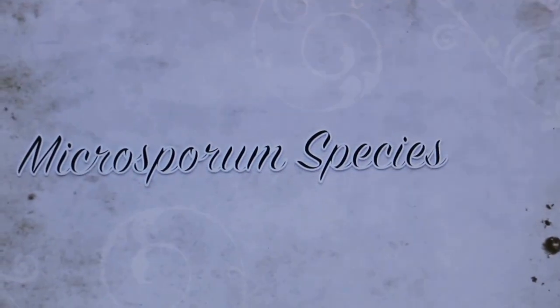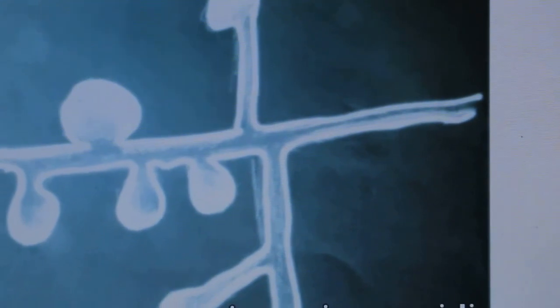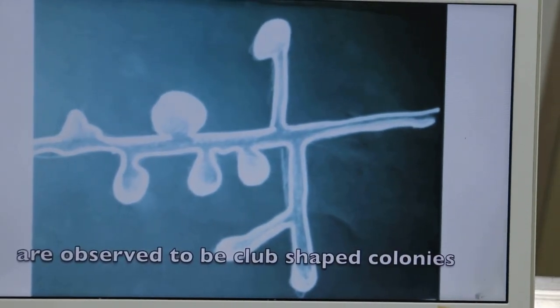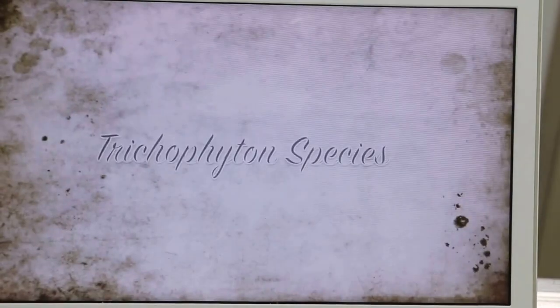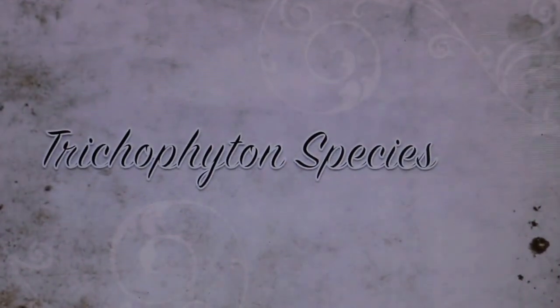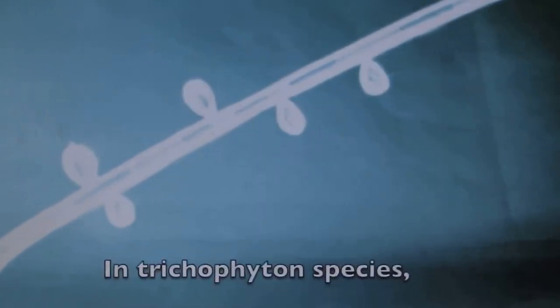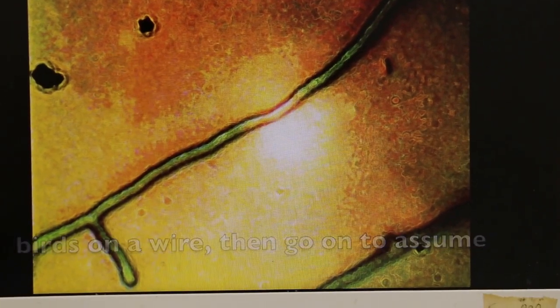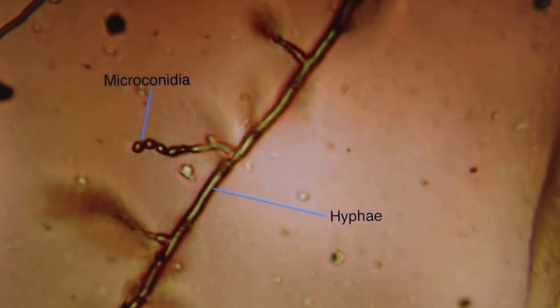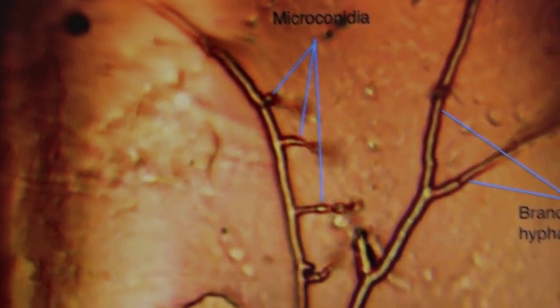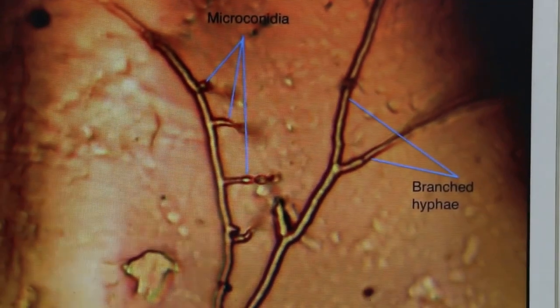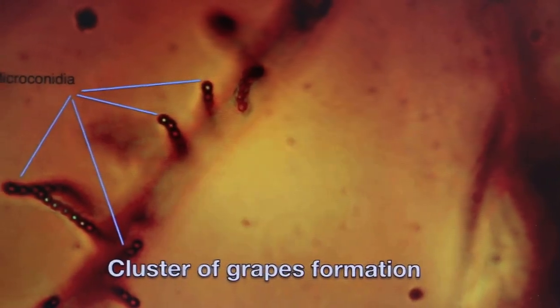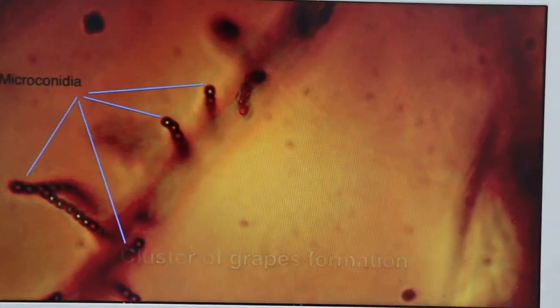So there are two species: Microsporium species, in which microconidia have big club-shaped colonies. Trichophyton, another species of ringworm - in Trichophyton species, microconidia start off like birds on a wire and then go on to form the formation of a cluster of grapes. The intern has produced quite a good video on this. She's a vet student, Vanessa Sim.